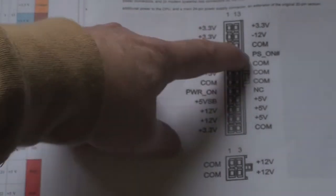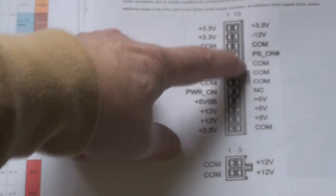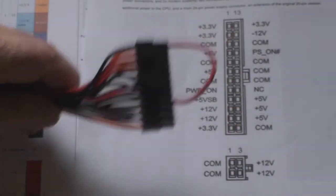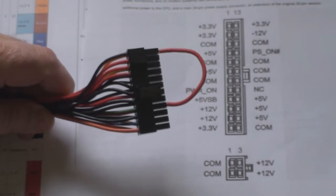So we need to short that out down to one of the earth terminals, or one of the ones that says common. I've done that with just very simply with a wire loop.